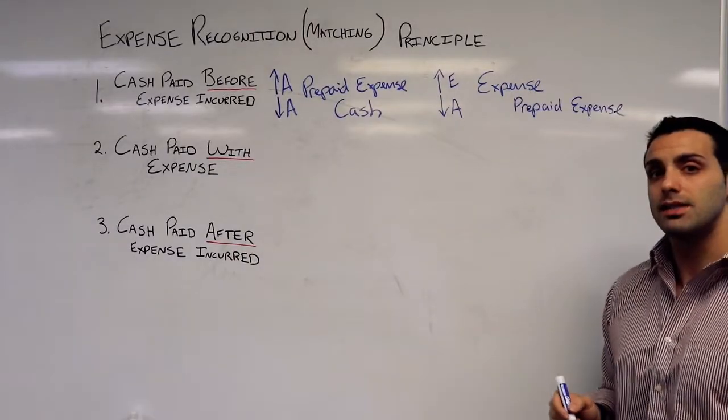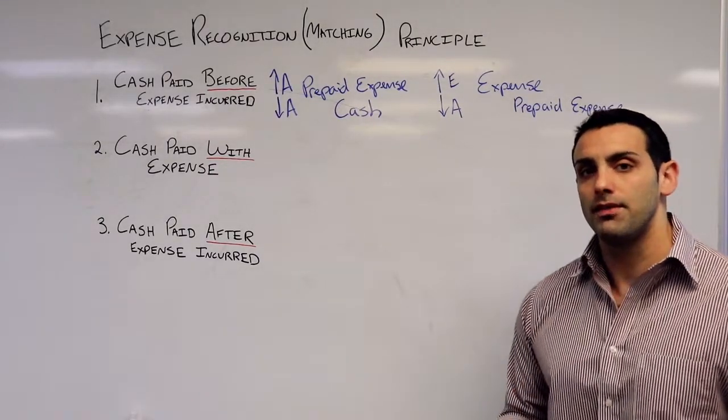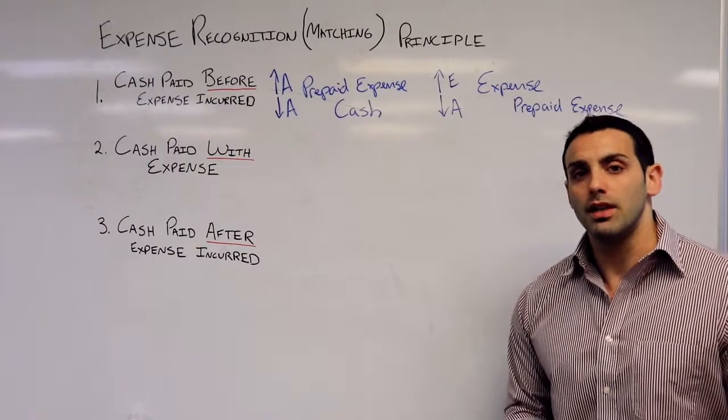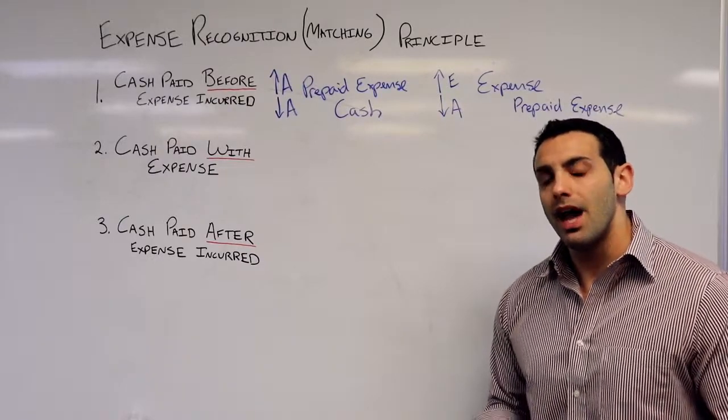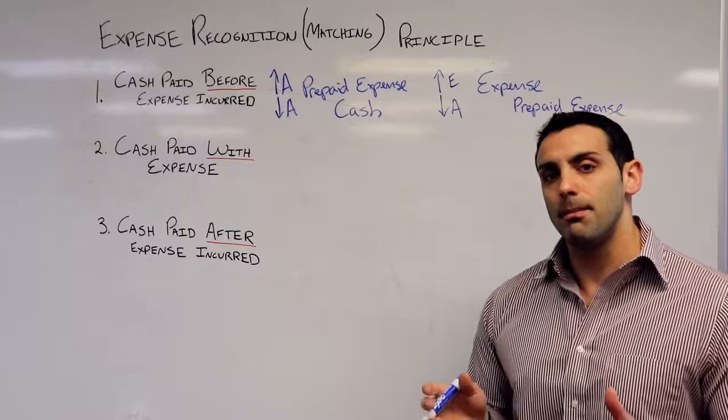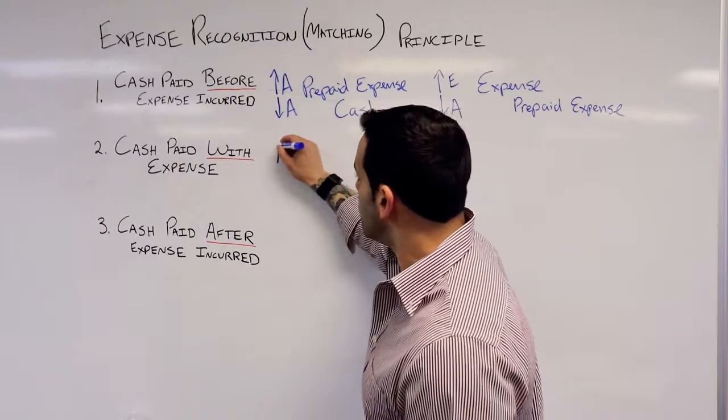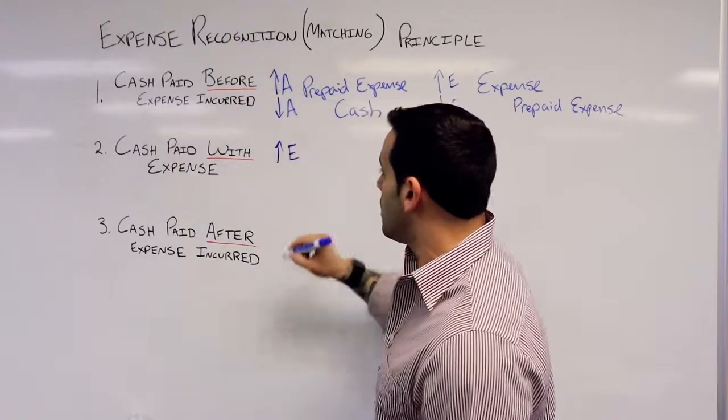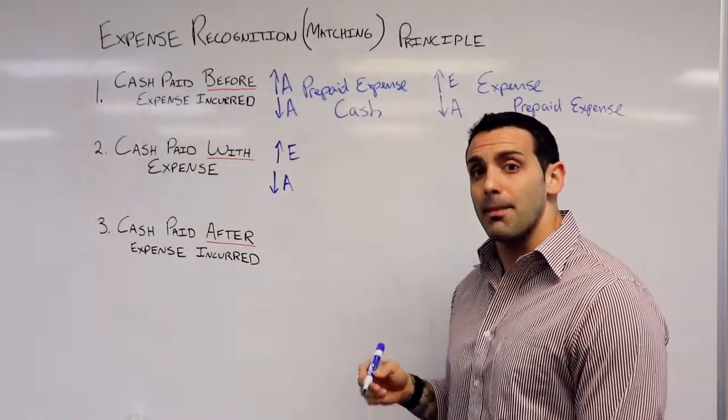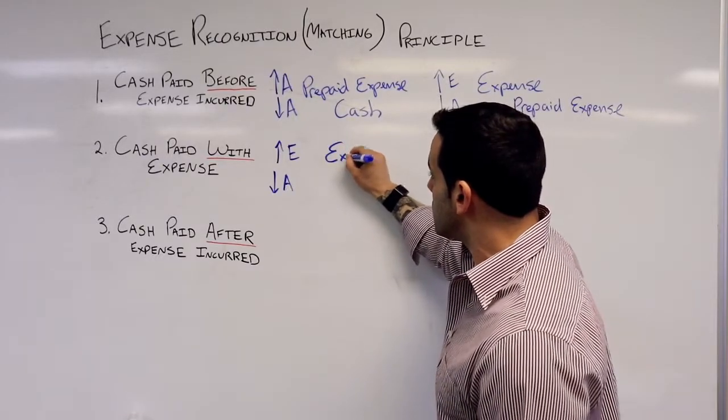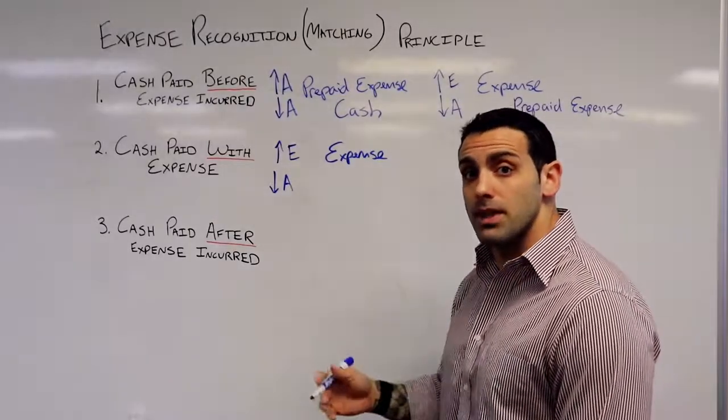The second example or situation is when cash is paid with the expense. A good example of this might be a utility bill. So if I set my utility bill on auto payment for the end of the month, I'm paying that expense in the same month or period that that expense was incurred. So I'm going to increase the expense or recognize the expense, and I'm going to decrease my asset because I'm actually going to pay for it. So I will debit expense, and I'm going to credit cash because I paid for it right then.